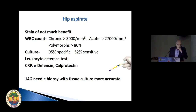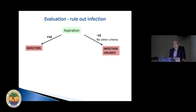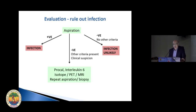If your aspirate comes back positive, it means you have infection. If it comes negative and the suspicion of infection is low because there are no criteria, then infection is highly unlikely. But if it is negative yet there are still other criteria making you suspect infection, I would do other tests. Personally I still feel PET is better than MRI, though I'd like to talk to Aditya about that.